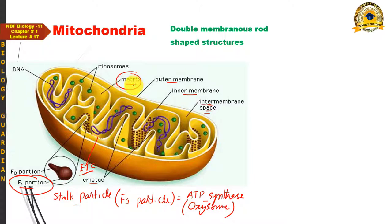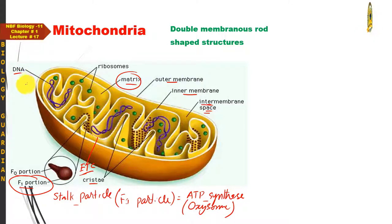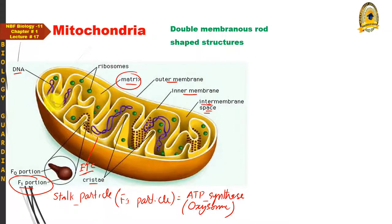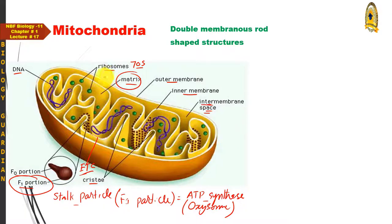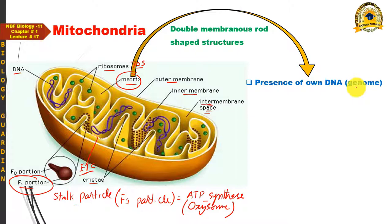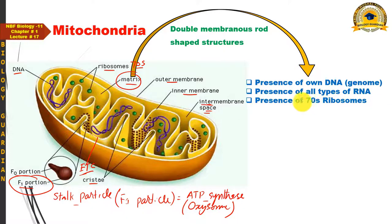The matrix has a complex composition. It contains circular double-stranded DNA — the same type found in prokaryotes — and not just one copy but several copies. The matrix also contains all types of RNA: messenger RNA, ribosomal RNA, and transfer RNA. Additionally, 70S ribosomes of prokaryotic nature are present in the matrix.